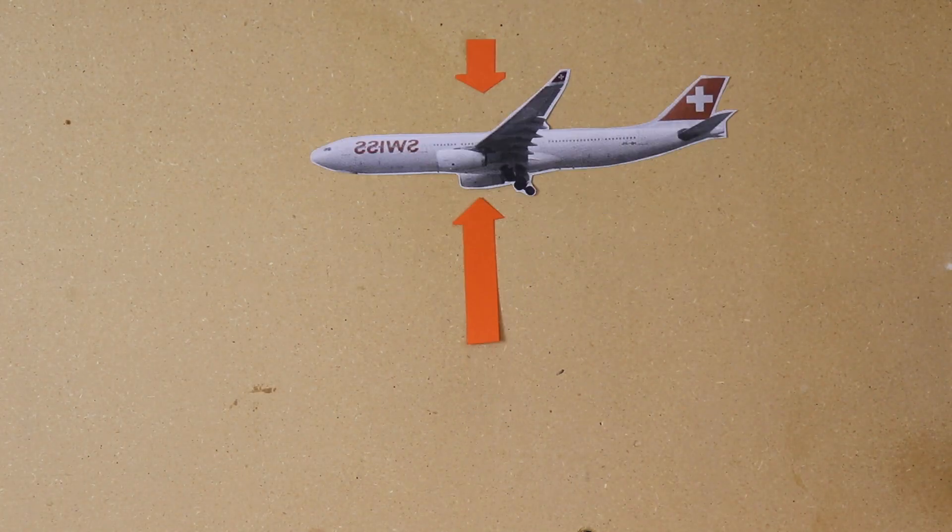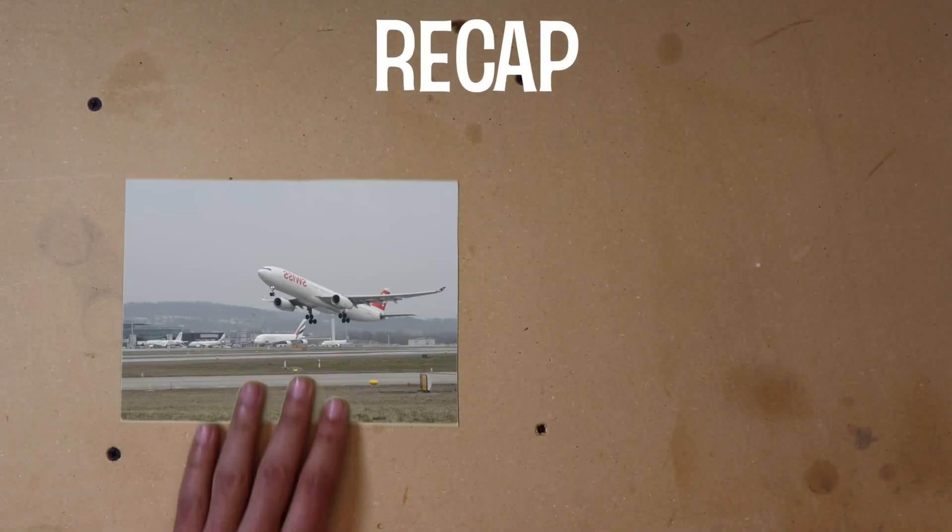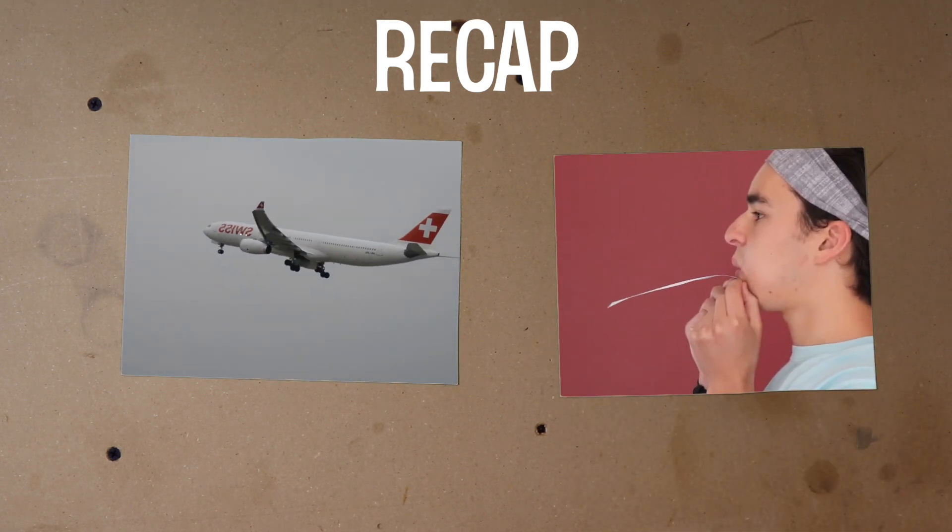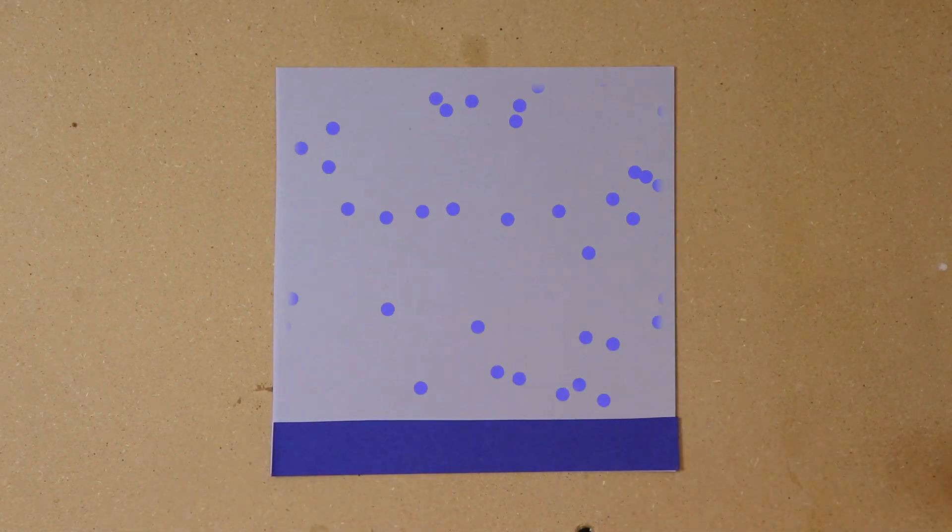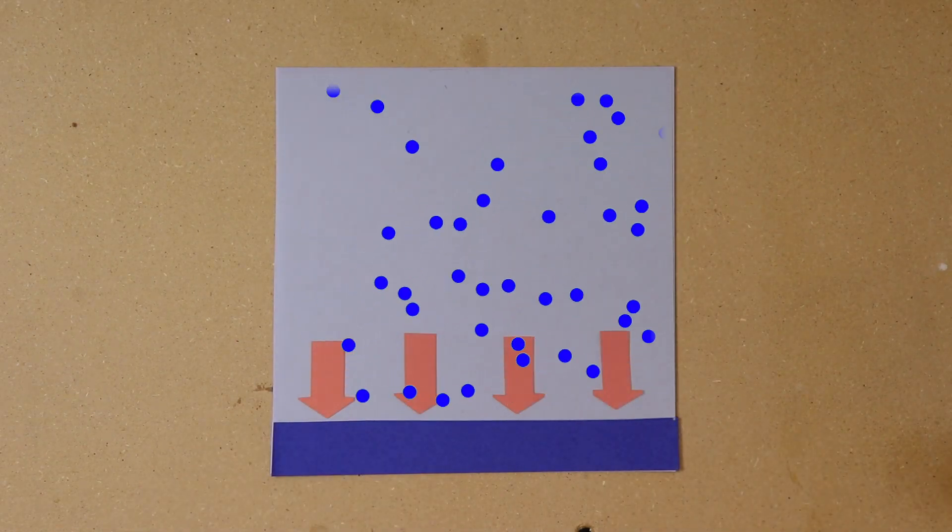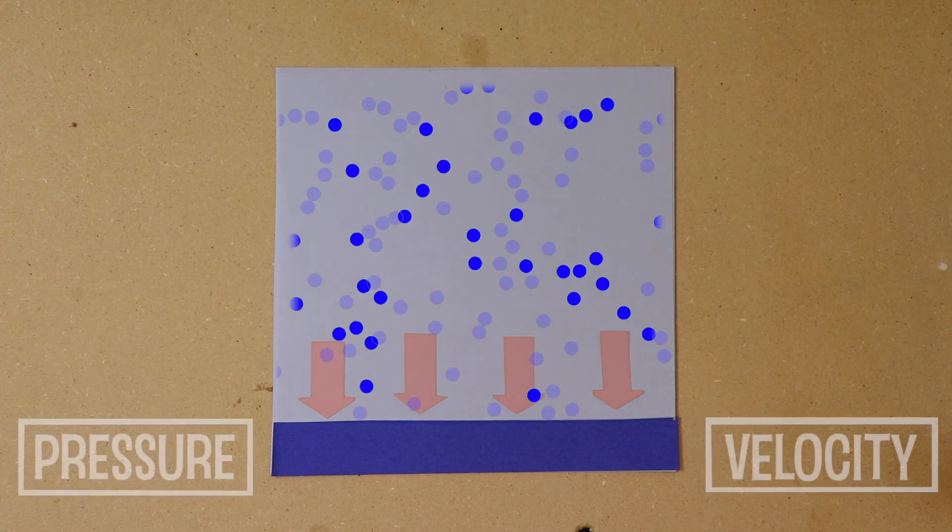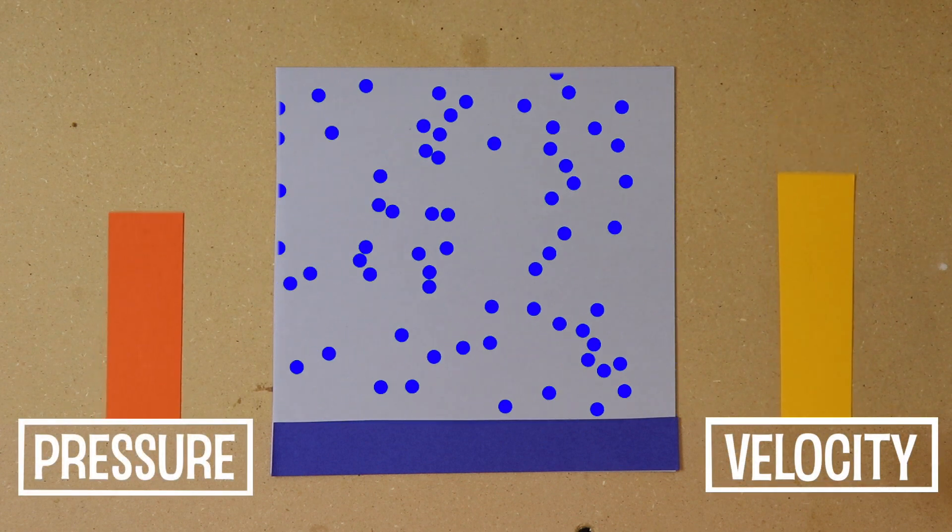So let's do a little recap. We wanted to know how the airplane and the piece of paper were able to lift up into the air. We learned about something called pressure. This is where the air particles provide a force against whatever they are in contact with. We also learned that the faster the air is moving, the lower the pressure.